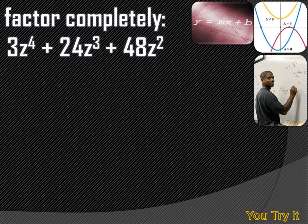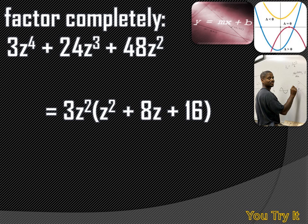This is a fairly complicated polynomial. My guidelines say the first thing I should do is try to factor out the largest monomial I can find in each of the terms. I can see there's a 3 in each of those terms, and there's at least a z squared in each of those terms. So I can factor out 3z squared and rewrite this as 3z squared times z squared plus 8z plus 16. And z squared plus 8z plus 16 looks like a perfect square — that's z plus 4 squared. So the complete factored expression is 3z squared times z plus 4 squared.